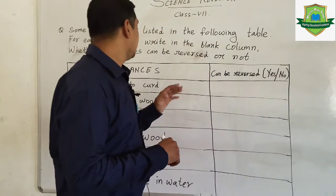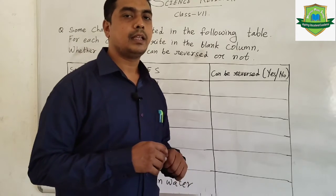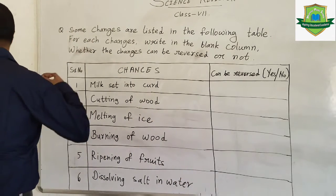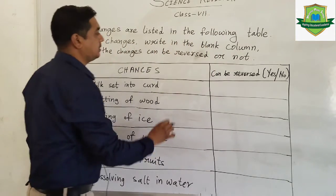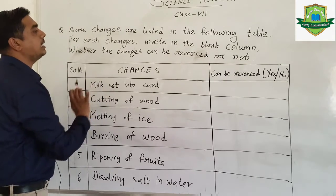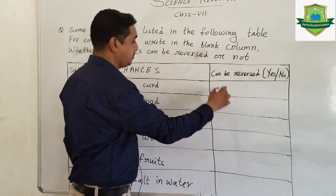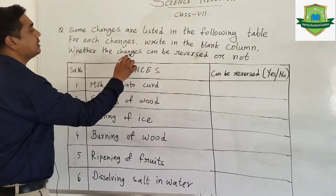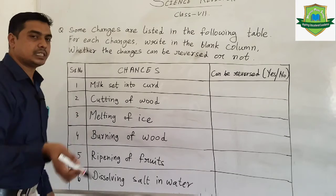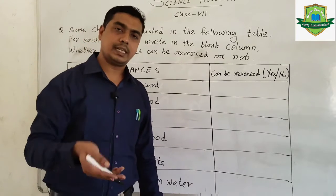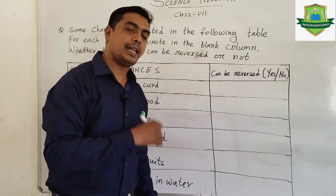On the board, I just wrote down a few questions. We will discuss them one by one. The question asks: some changes are listed in the following table. For each change, write in the blank column whether the changes can be reversed or not — that means, which is a physical change and which is a chemical change.